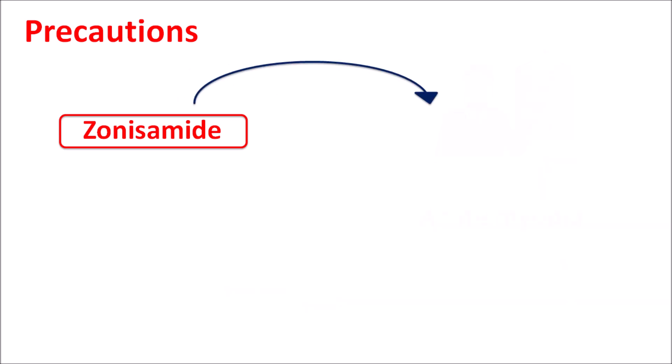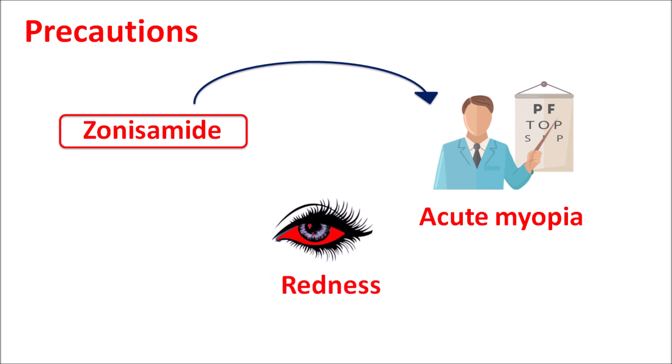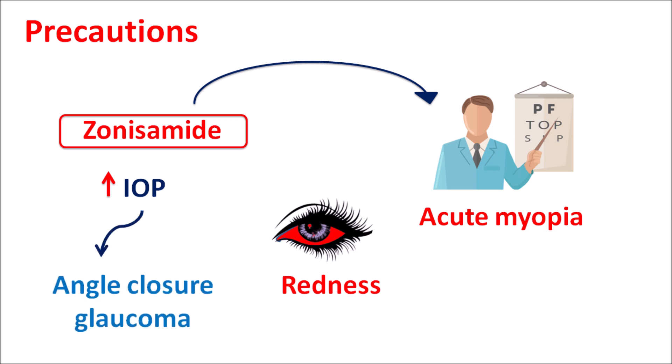Similarly, this drug can induce acute myopia, resulting in loss of vision for far objects. It can also produce swelling of the anterior chamber of the eye and hyperemia — redness of the eye. Zonisamide can also increase intraocular pressure, which can increase the risk of angle closure glaucoma. So in patients with any history of angle closure glaucoma, this drug should not be given. On long-term use at high doses, particularly above 300 mg, this drug may produce vision changes which should be closely monitored.